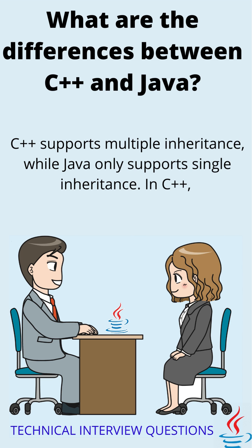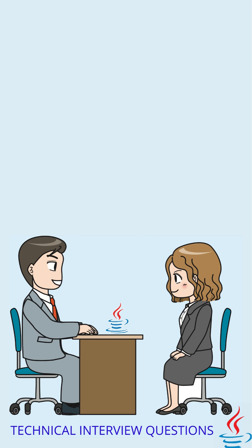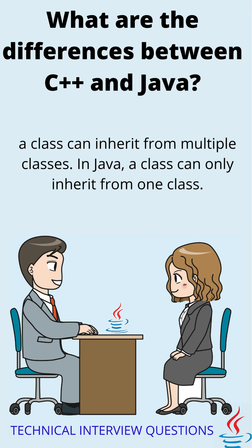C supports multiple inheritance, while Java only supports single inheritance. In C, a class can inherit from multiple classes. In Java, a class can only inherit from one class.